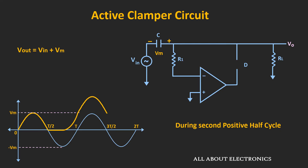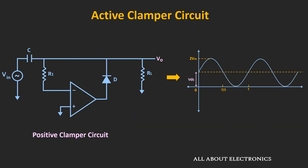During the next negative half cycle also, the output voltage Vout can be given as Vin plus Vm, because the op-amp will still operate in the open-loop configuration since V- is still greater than V+. So in steady-state condition, the output waveform will look like this. We can say that this circuit is the active positive clamper circuit, because it shifts the entire waveform upwards by Vm volts.